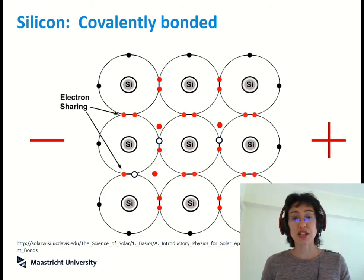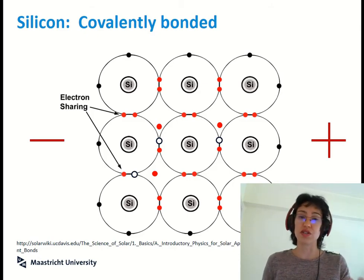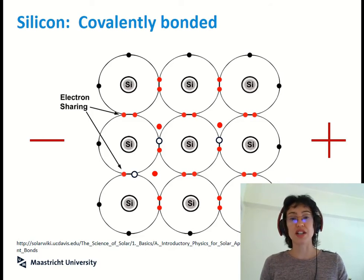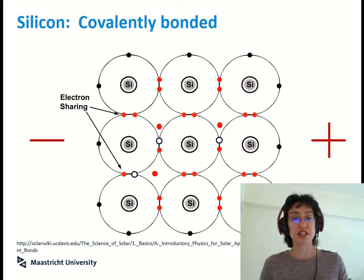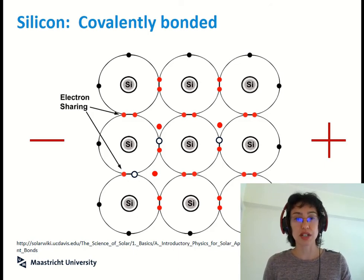if I was to add a potential difference - so positive and negative sides to the material - you will get current flow because the electrons obviously are negative, so they will be repelled from the negative side and towards the positive side of the material. So this is how you get current flow in a semiconductor.